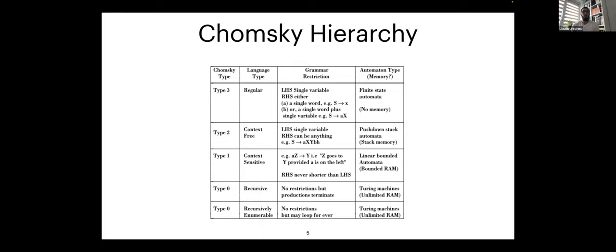Moving one step up, you reach type 0, the most general grammar. It has the characteristic of being recursive — meaning it can terminate; you are guaranteed to stop producing at some point. There are also recursively enumerable languages from type 0 grammar, which would loop forever — this is where Turing's famous halting problem comes in. This is a brief picture of the Chomsky hierarchy: grammars creating languages, and computer scientists taking those languages and putting them into computers.